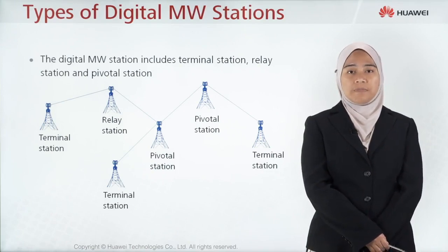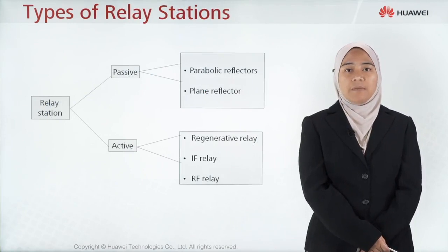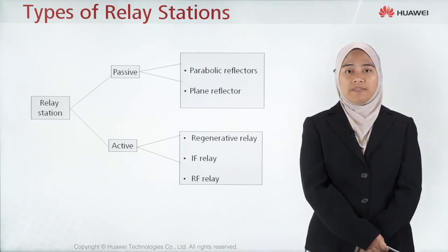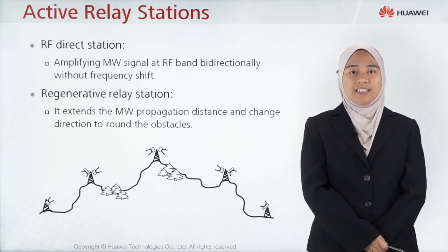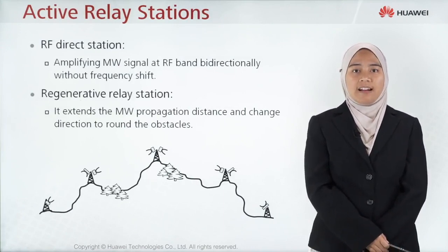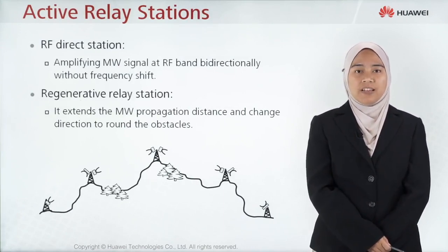The pivotal station is usually located at the backbone; it has multi-direction capability and is also called a hub station. Relay stations are divided into two types: passive and active. For passive, you have parabolic reflectors or plane reflectors. For active, you have regenerative relay, IF relay, or RF relay.